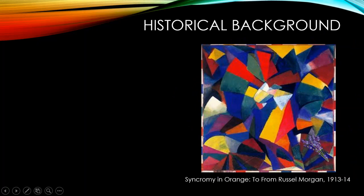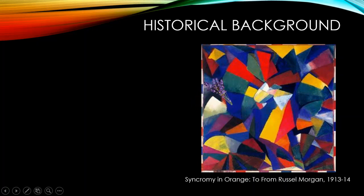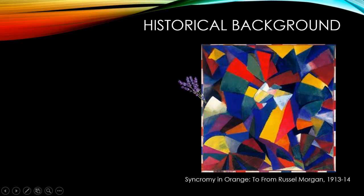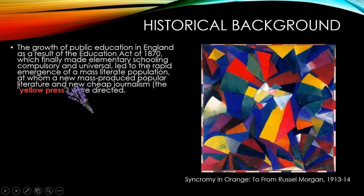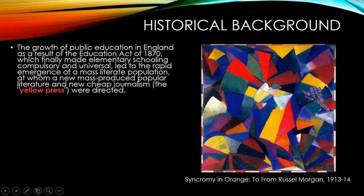Instead of looking outward, the work of art is now looking inward — self-reflexivity becomes a core principle. This artist reflected on the forms that give shape to other forms: the basic geometrical ones, the basic colors, everything in the air. The focus is on painting itself, on the rudiments of the art. Meanwhile, the growth of public education in England — as a result of the Education Act of 1870 which made elementary school compulsory and universal — led to the rapid emergence of mass literature and cheap journalism, the 'yellow press.'